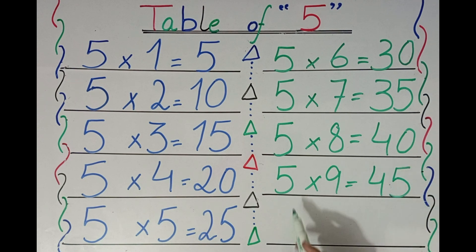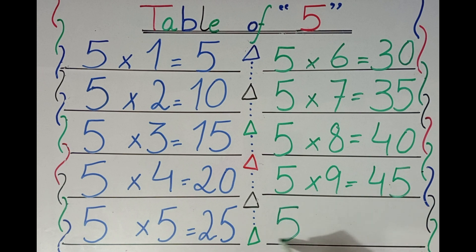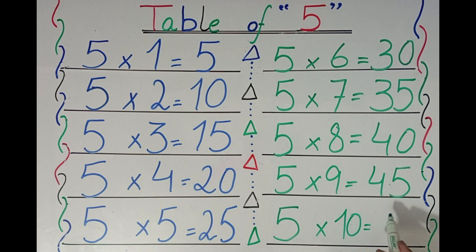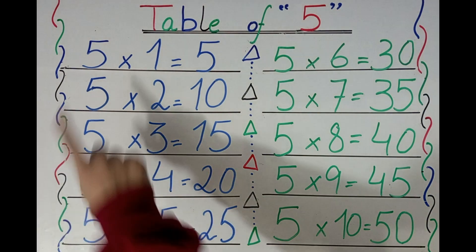Five nines are forty-five. Five tens are fifty. Five tens are fifty.